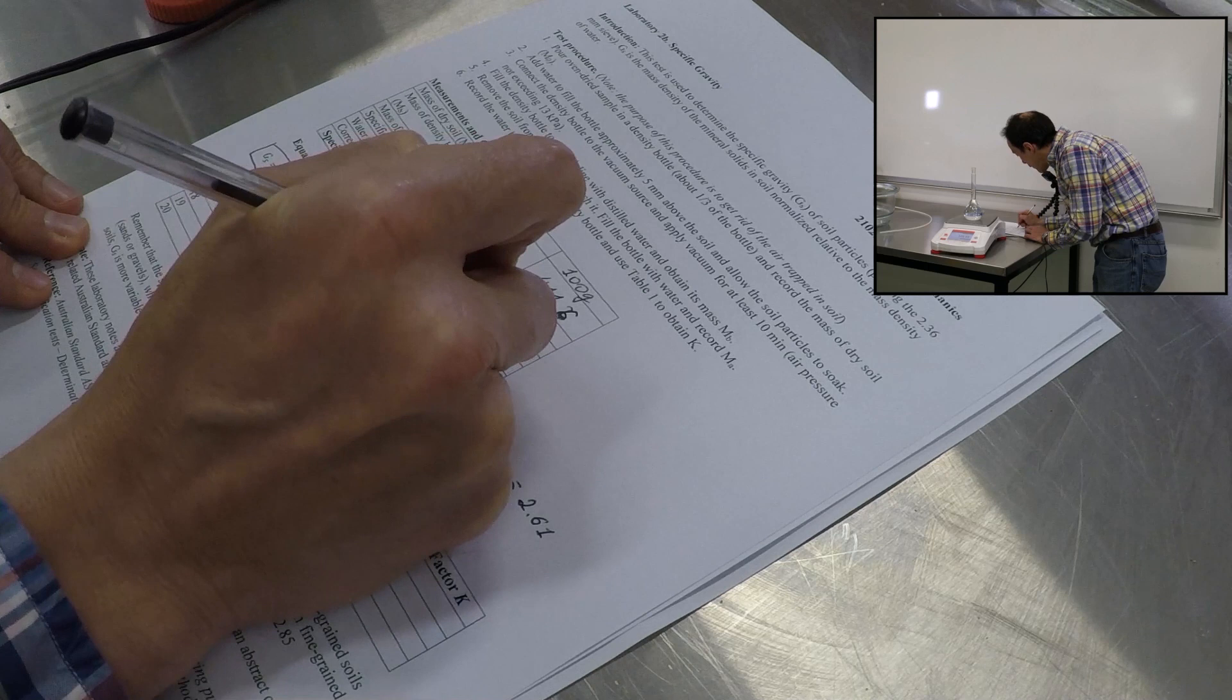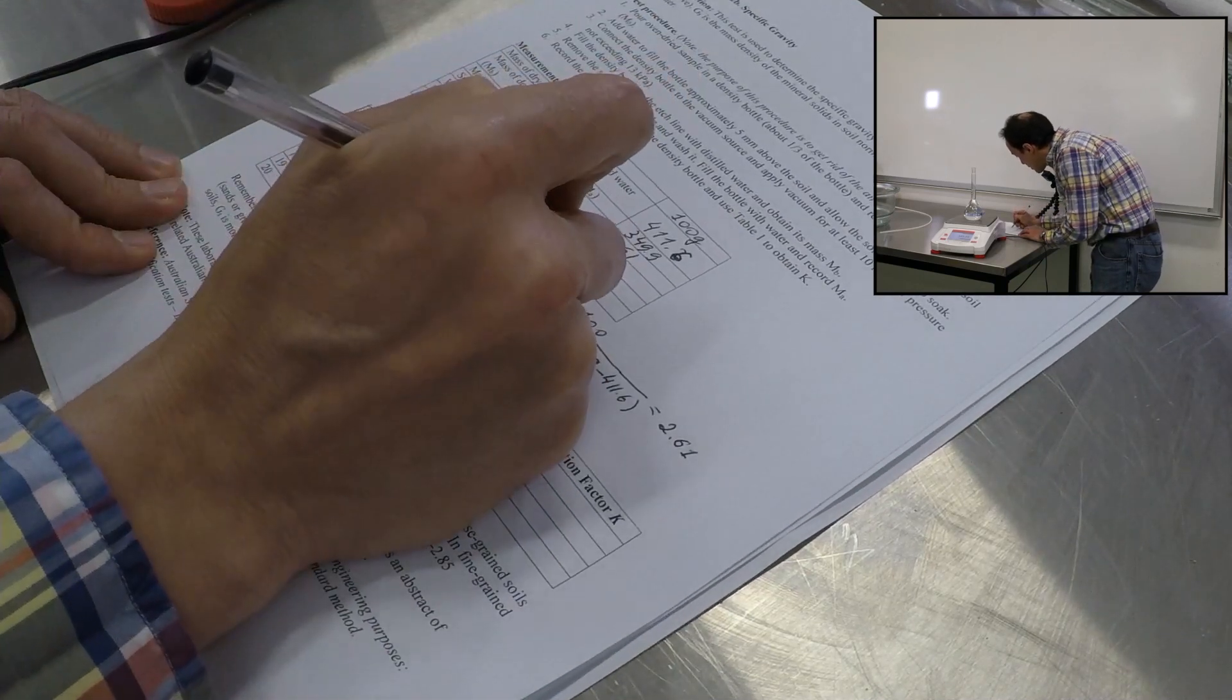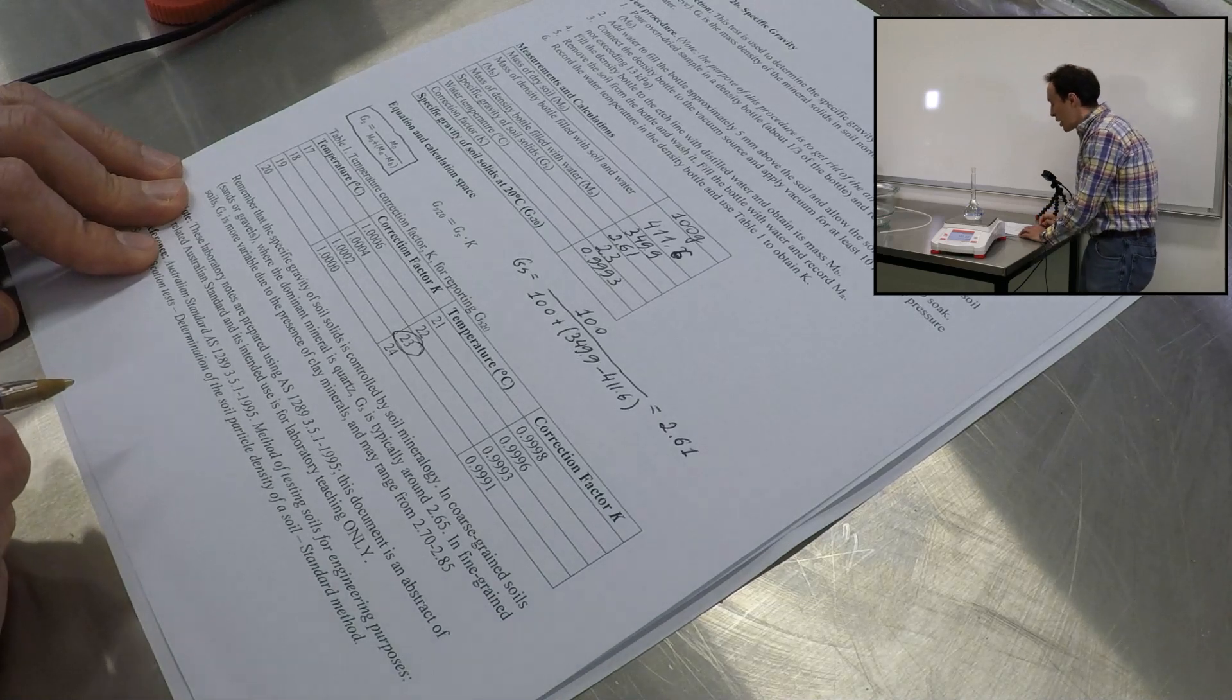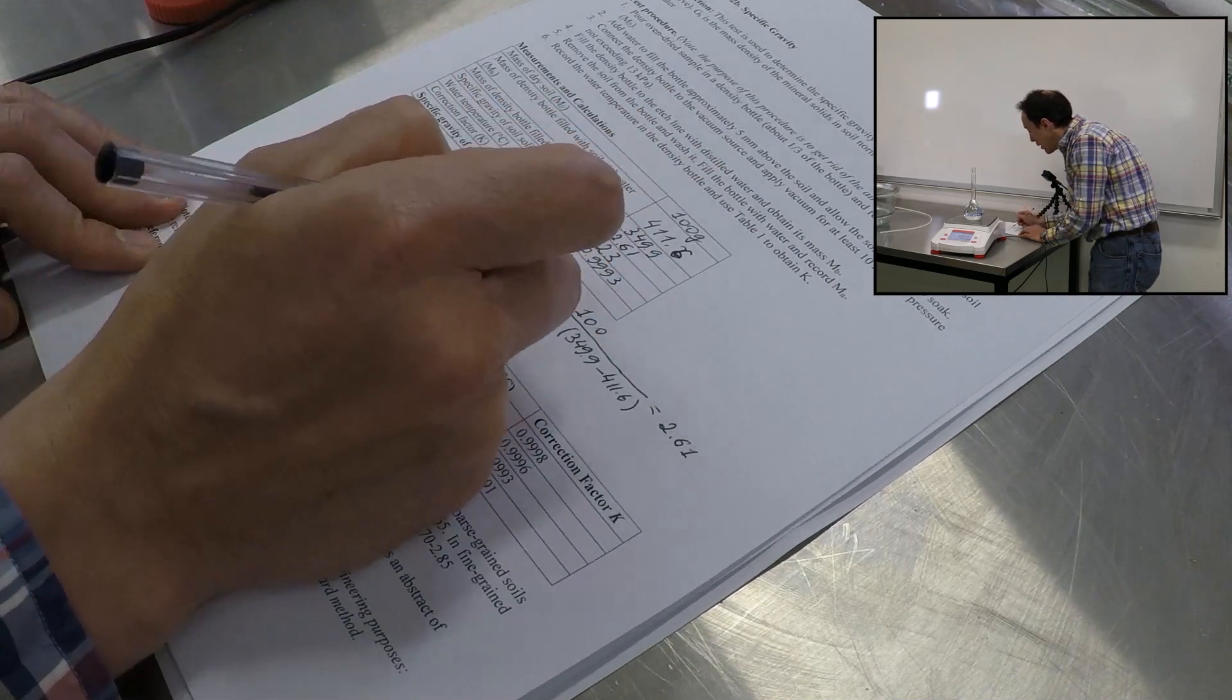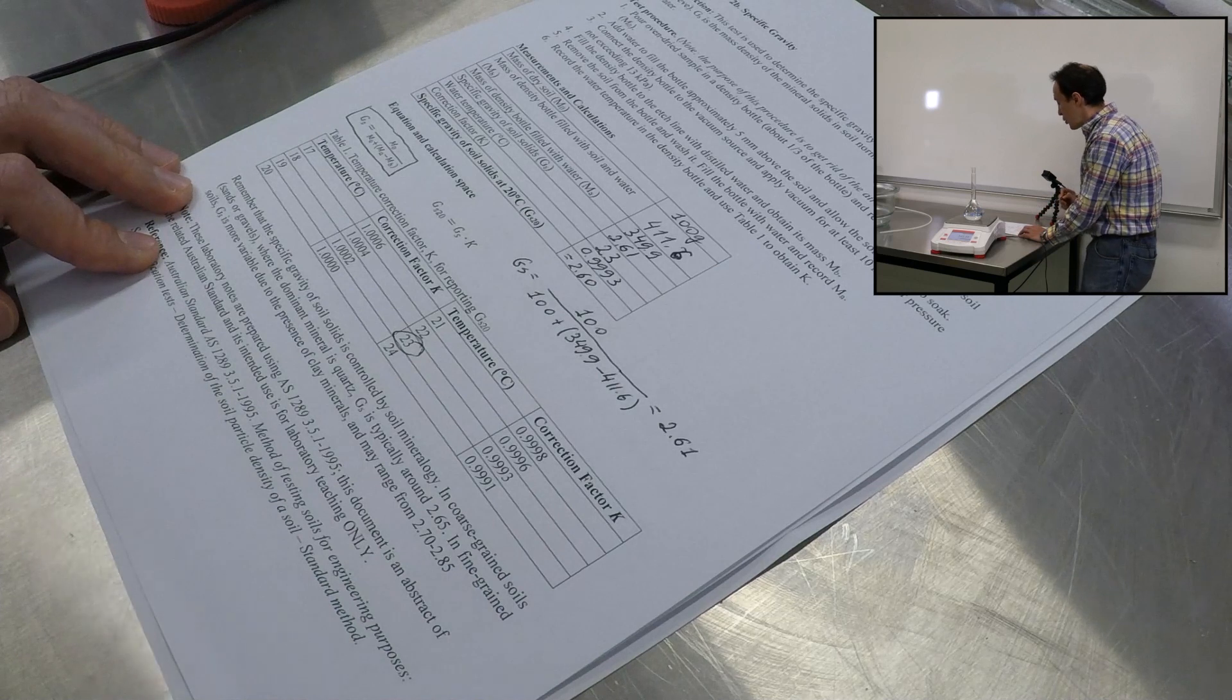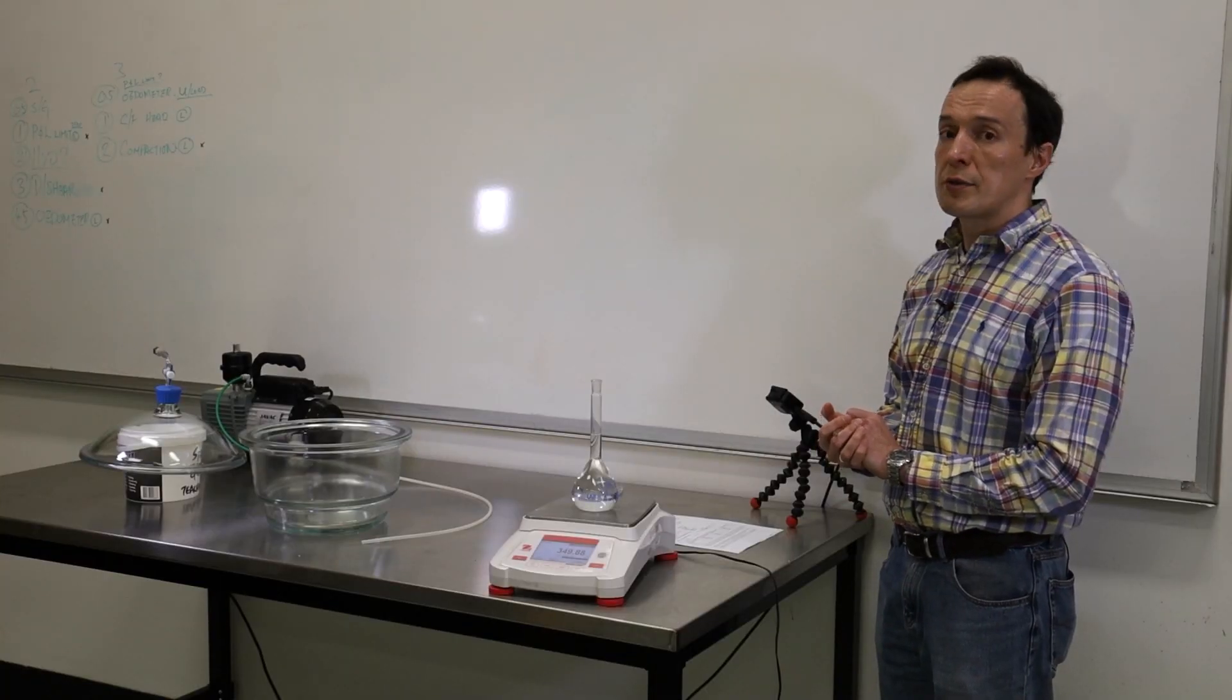And the final step, we will consider the correction factor. So correction factor, we'll look at the table. We'll see that for the temperature 23, the correction factor is 0.9993. And we will correct the specific gravity to 20 degrees Celsius. We'll use the specific gravity 2.61 and multiply by the correction factor. And it should give us about 2.6. So 2.6, it has no units. That's going to be the answer. And this is the specific gravity for this soil. That concludes this experiment.